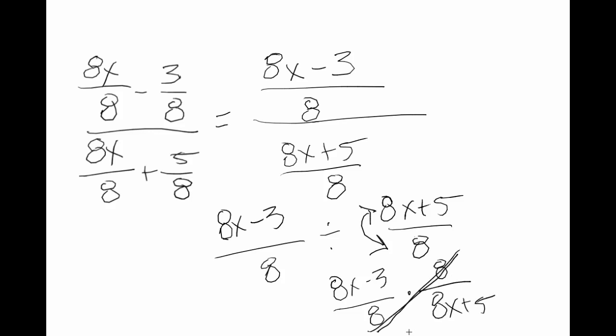This cancels. The two eighths cancel. And then I'm left with 8x minus 3 over 8x plus 5.